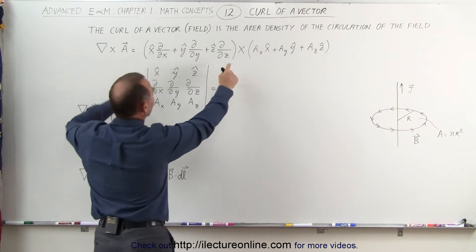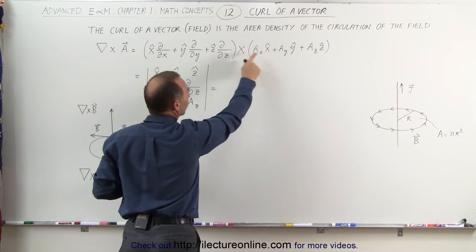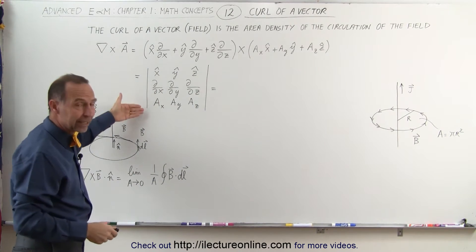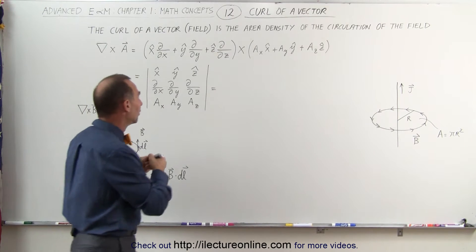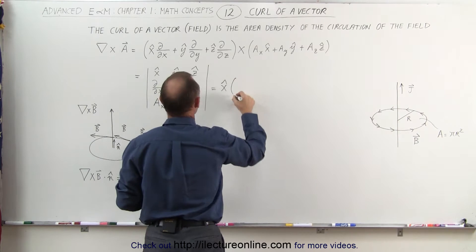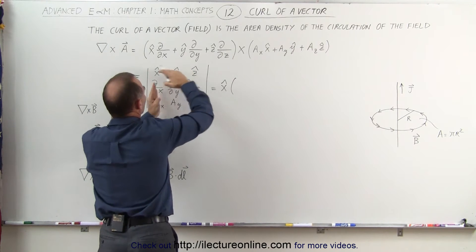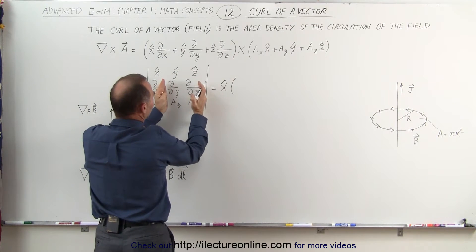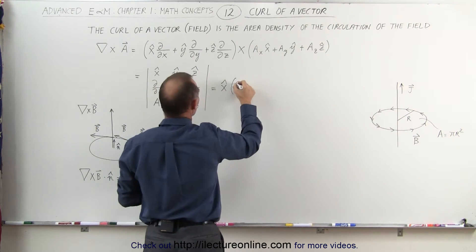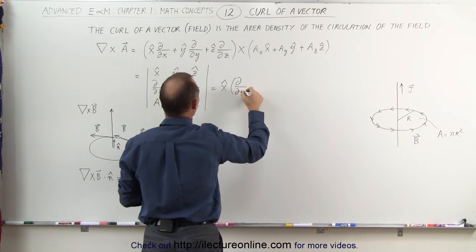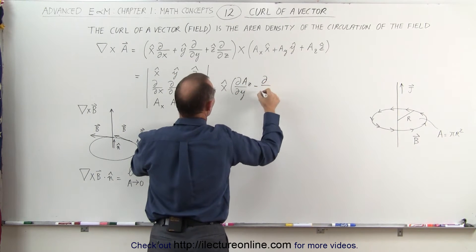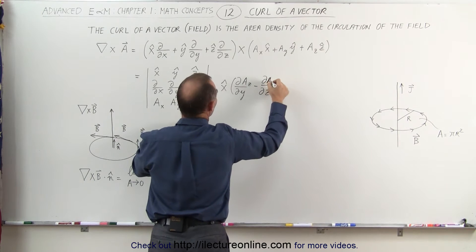So here's the DEL operator, and we're making a cross product with the vector or the vector field. And of course, it will look like this in a matrix format. And then when we work this out, it looks like this. We take the first element here, the X unit vector times, we cross out this row and this column we're left with those four elements. We multiply those two together and subtract from and multiply those two together. So we end up with the partial with respect to Y of A_Z minus the partial with respect to Z of A_Y.